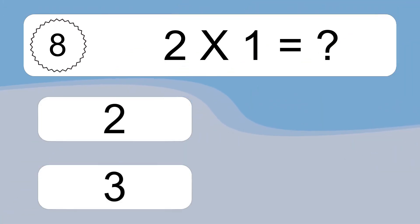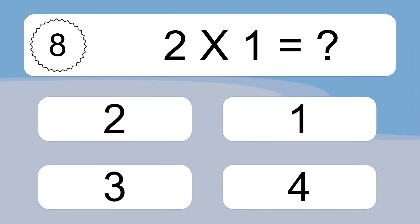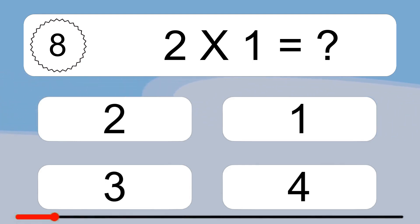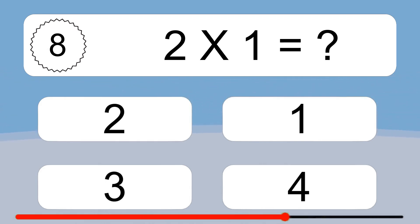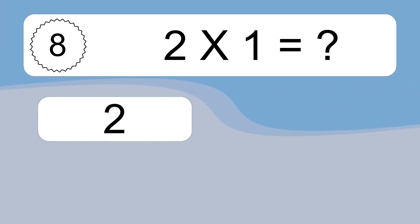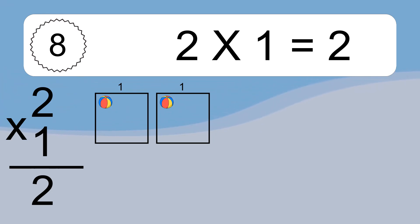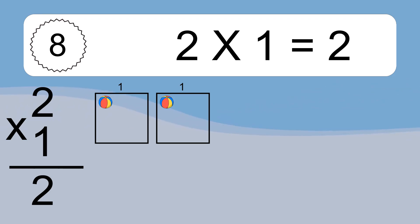2 times 1 equals what? 2 times 1 equals 2. We have 2 boxes, and each box has 1 colorful ball inside. If you count all the balls in all the boxes together, you will have 2 times 1 balls. This equals 2 balls.